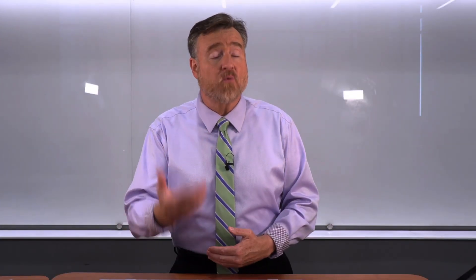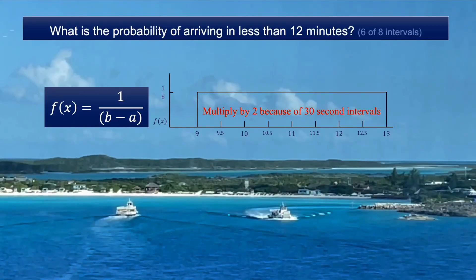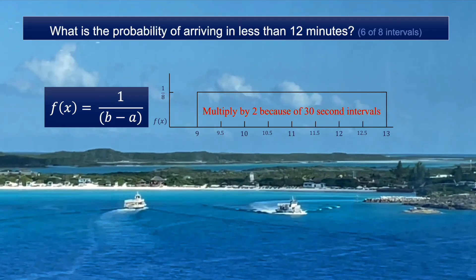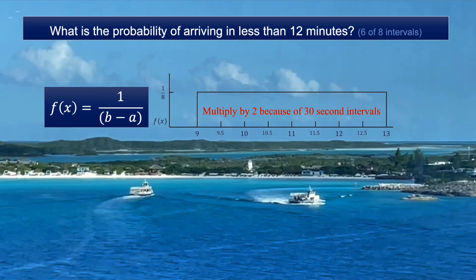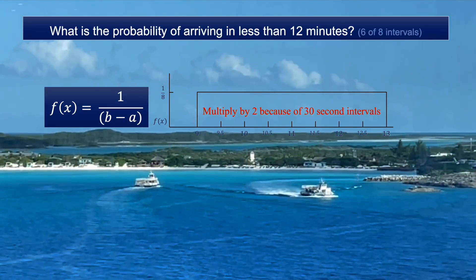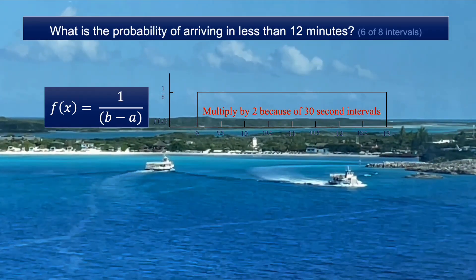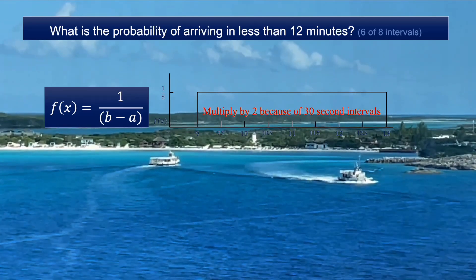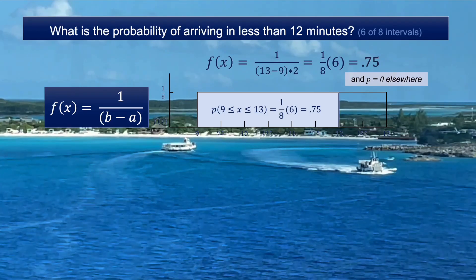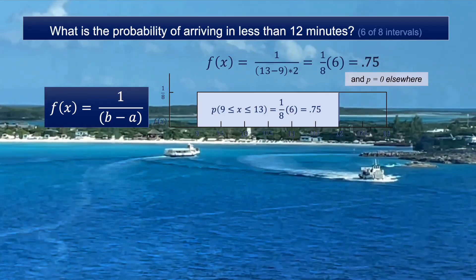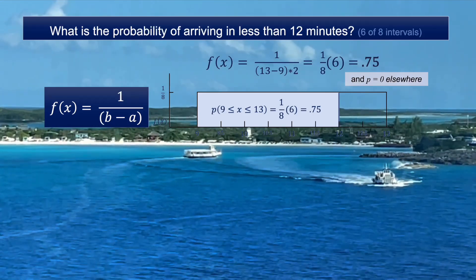Now we can answer some questions about the probability of specific arrival times. For example, what is the probability of arriving in less than 12 minutes, or six of the eight intervals? In this case, we're going to multiply by two because of the 30-second intervals rather than the one-minute intervals. Six of eight intervals is three-quarters of the distribution. Therefore, the probability of arriving in less than 10 minutes is .75.